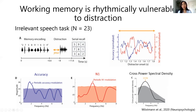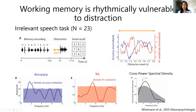We then wanted to see whether there is a rhythmicity in these two time courses. We ran a linear mixed model with sine and cosine transforms of distractor onset time as rhythmic predictors to extract the magnitude of modulation at certain frequency ranges. What we saw is a rhythmic modulation in accuracy and N1 at around the delta-theta range. We also found a common rhythm using cross-power spectral density at around 2.5 Hz, which is quite interesting.